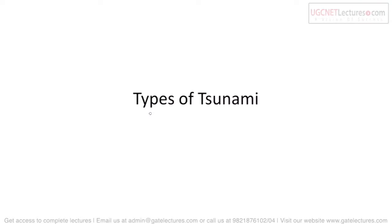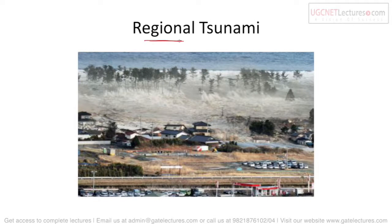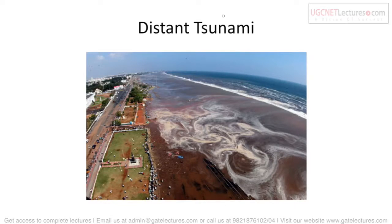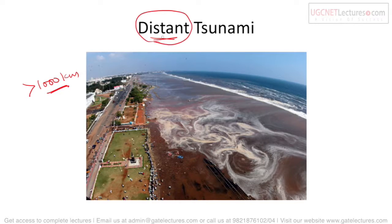There are different types of tsunamis. The first is a regional tsunami, which occurs within a range of up to one thousand kilometers from the sea coast. If the tsunami originates more than one thousand kilometers from the sea coast, we call it a distant tsunami. The effect of a regional tsunami is slightly less than that of a distant tsunami.